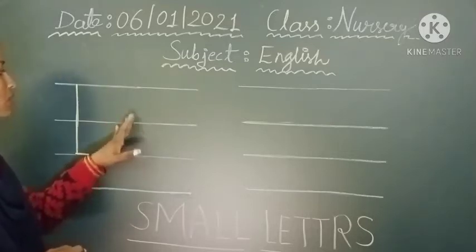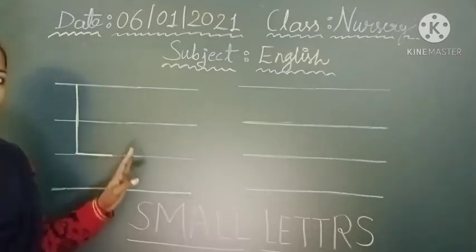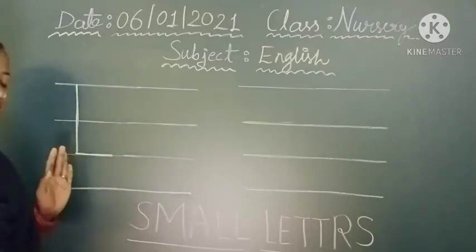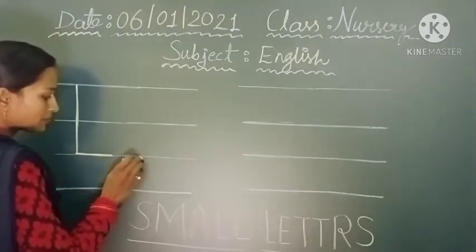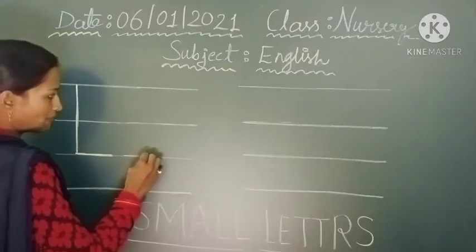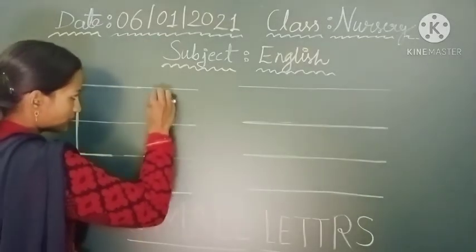Now we have to learn how to write small letters of L. It's very simple. Only you have to draw like this, standing line.